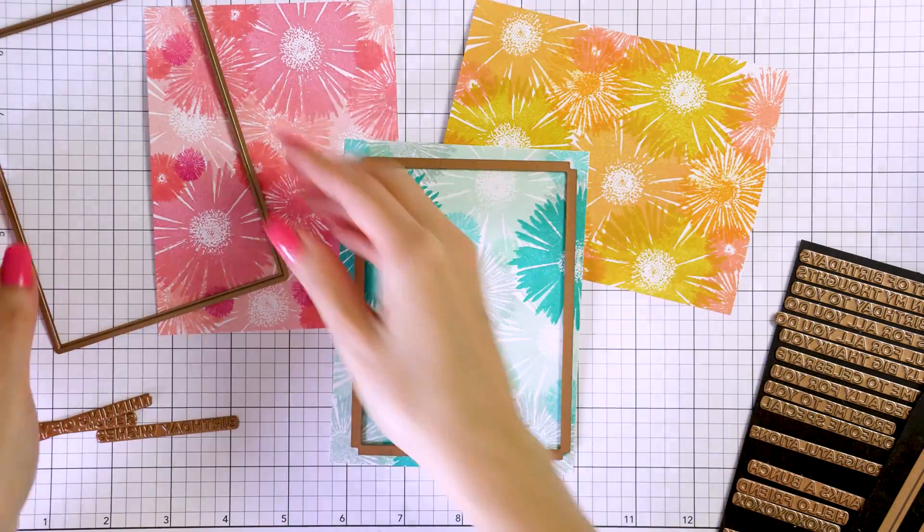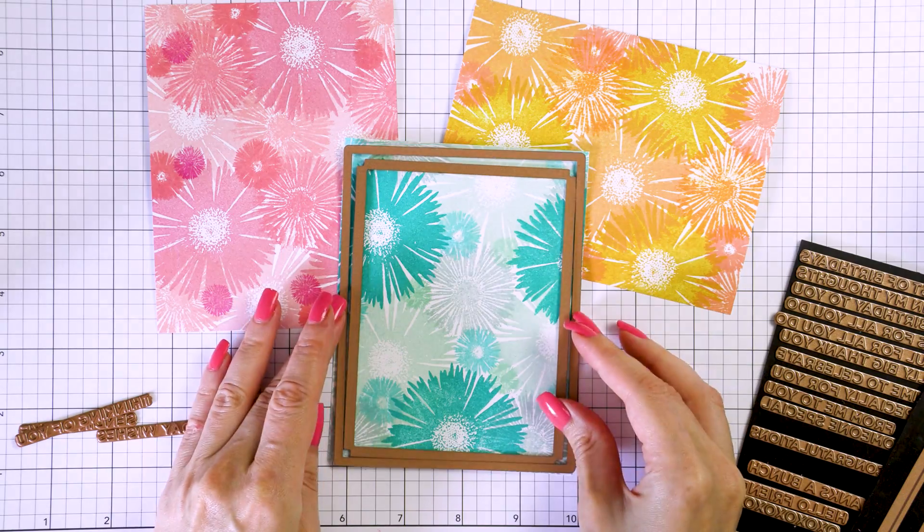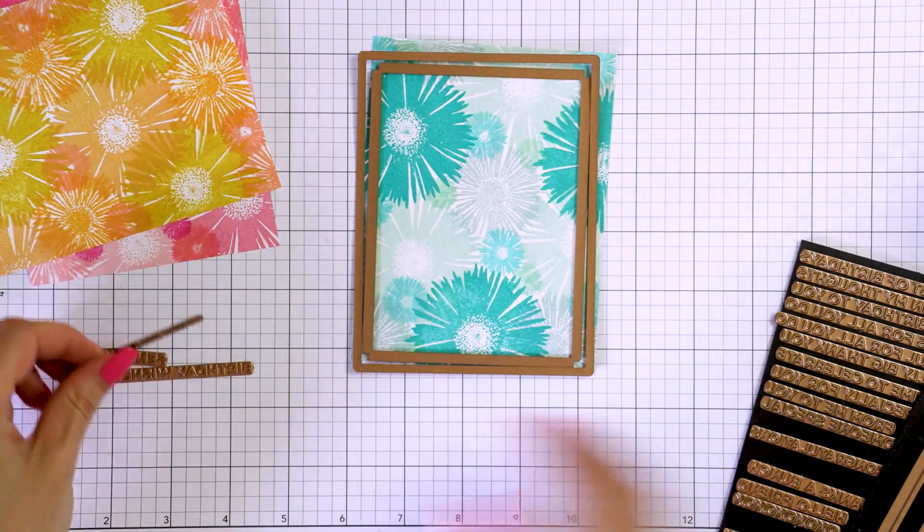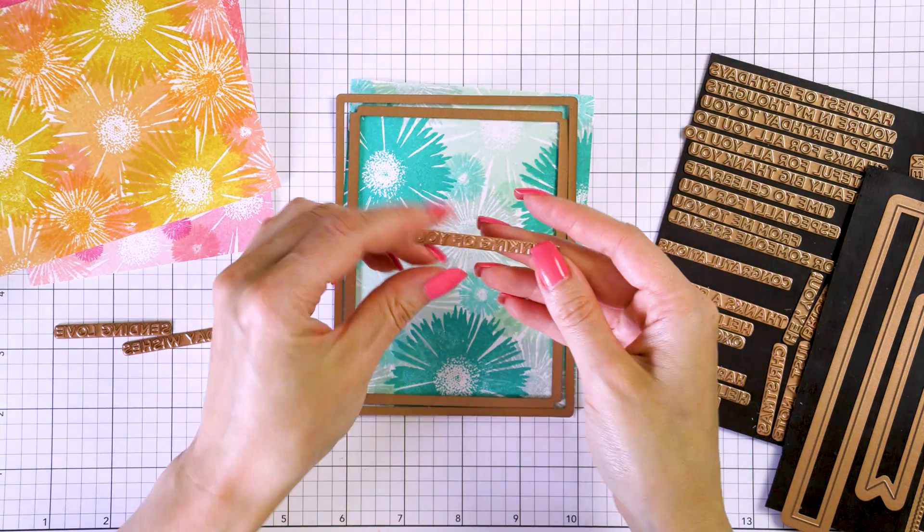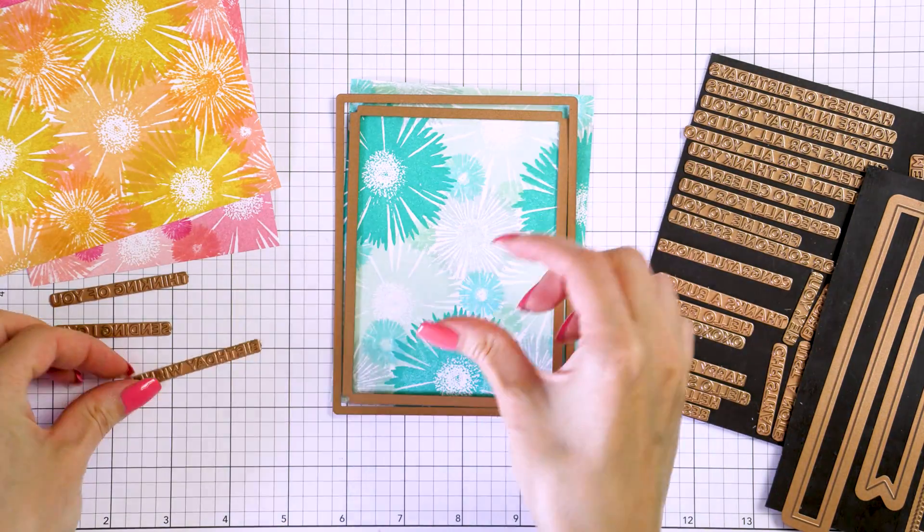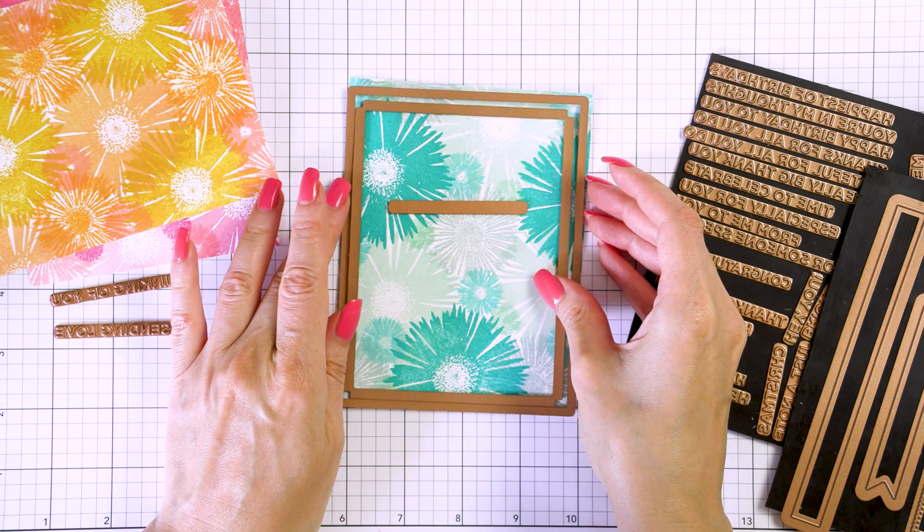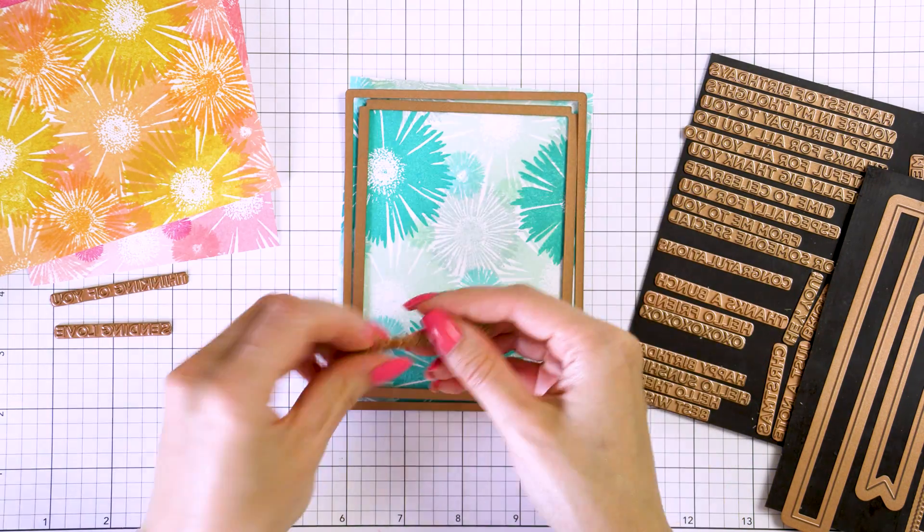I love to foil so I thought I would use a few glimmer plates from Spellbinders and foil a frame as well as a sentiment for each of these. I used a beautiful geometric frame from the Framed Details Glimmer Hot Foil set. I love the double line on this plate and I foiled it in matte gold foil on all of my panels. I then used a rectangle die and cut all of the foiled panels out.